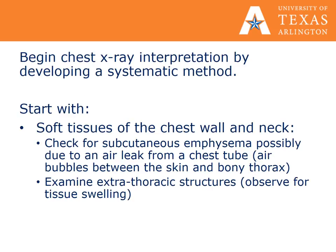Begin chest X-ray interpretation by developing a systematic method, starting with the top soft tissues of the chest wall and neck. Check for subcutaneous emphysema, possibly due to an air leak from a chest tube. You will see air bubbles between the skin and the bony thorax. Examine the extrathoracic structures, observing for swelling of tissues.